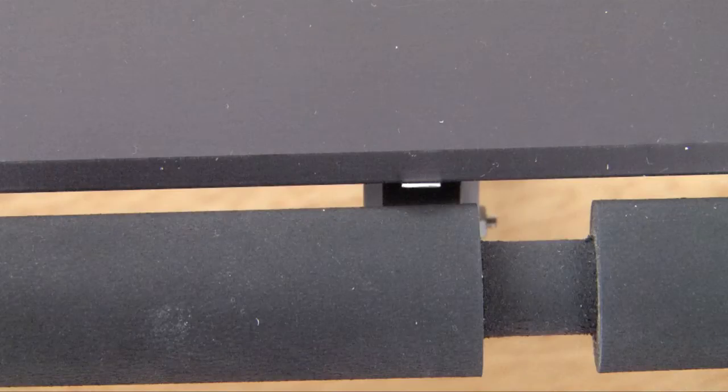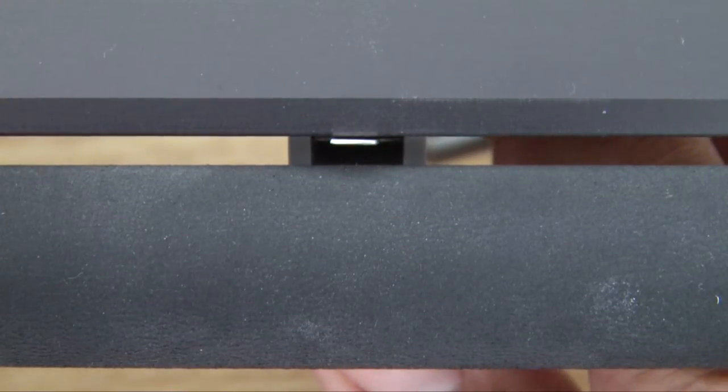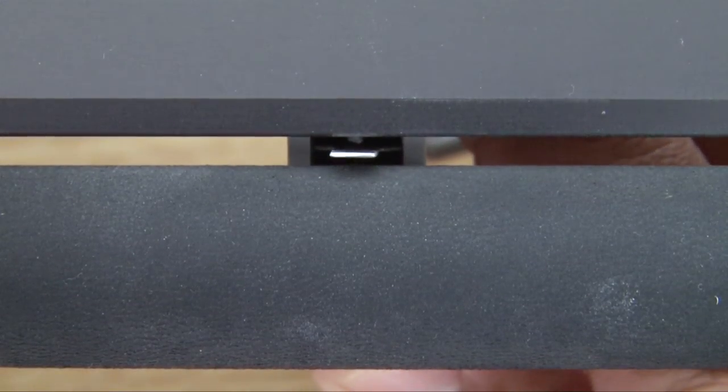Make sure you do not loosen the set screw on the bottom of the switch housing. The set screw is simply there to move the switch housing from side to side, not for switch housing adjustment.